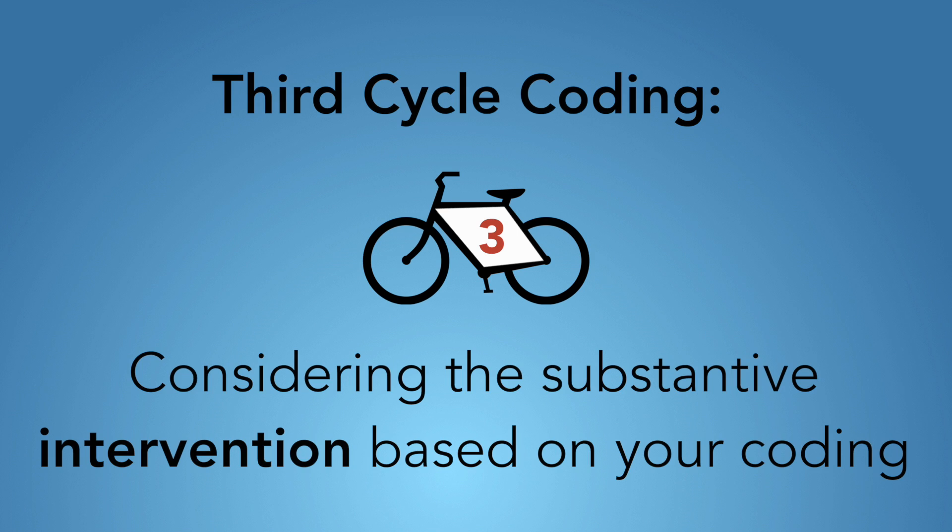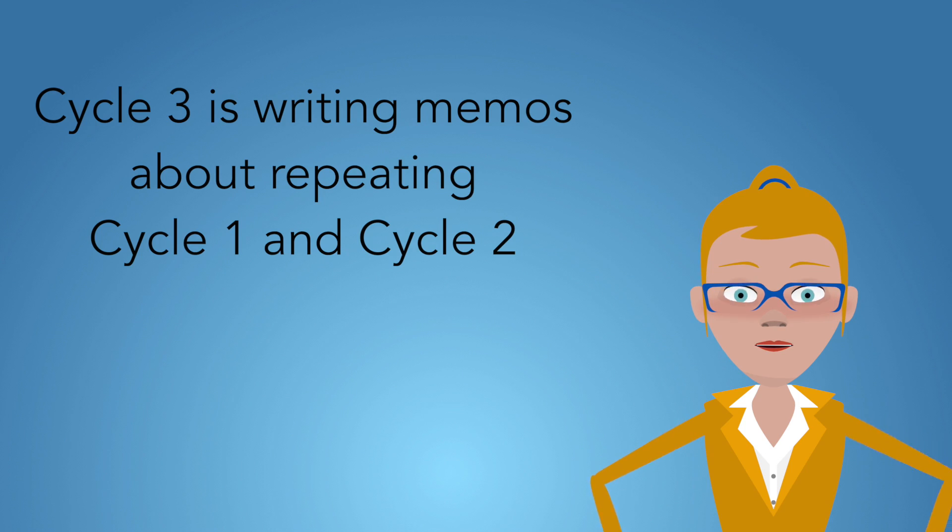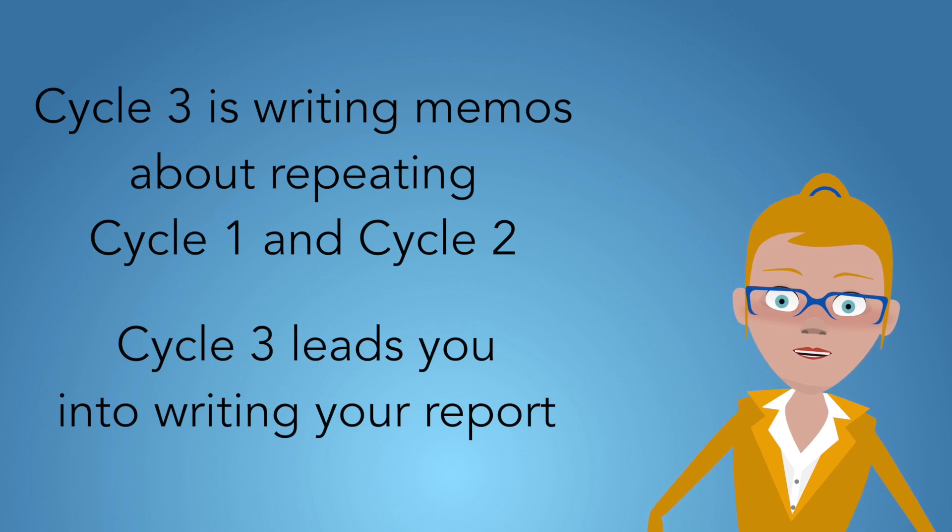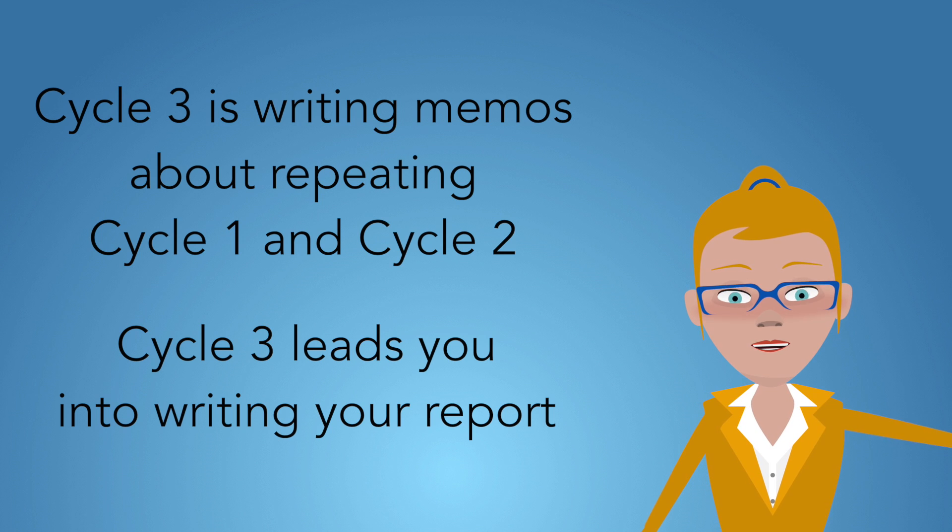Your third cycle coding is actually a lot like memo writing. It's considering the substantive, theoretical, political, methodological interventions that you're making on the basis of your coding process. So cycle one and cycle two, you're going in and out of all the time. And cycle three, it's good to go in and out of all the time by keeping a memo, but this is where you're going eventually when you're writing up.